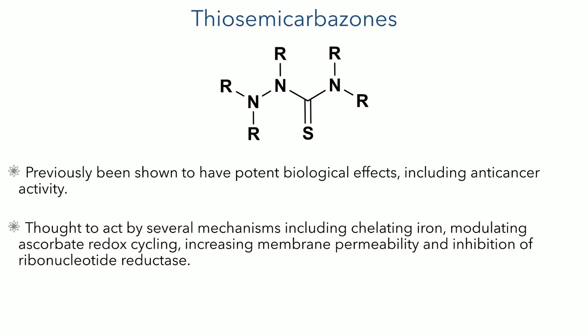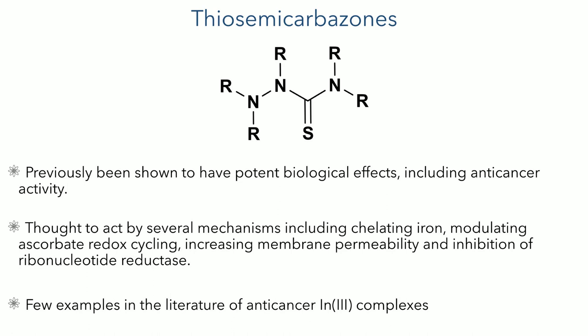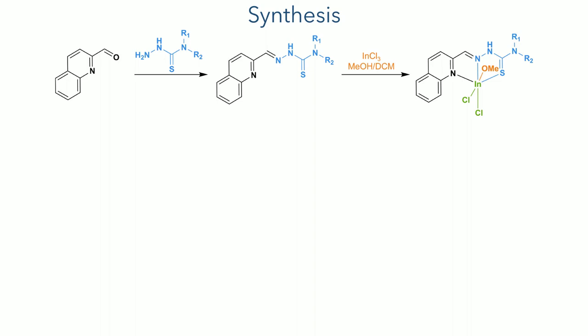There are many examples in the literature of compounds of iron, copper, and zinc showing good biological activity. However, there have been relatively few examples of indium-3 complexes, which this paper explores. The synthesis of these compounds is rather trivial, as the ligands are made by simply refluxing the desired thiosemicarbaside with quinoline-2-formaldehyde, which produces the target thiosemicarbazone ligand. To generate the indium complexes, the ligand was reacted with indium trichloride in a mixture of methanol and DCM at 100 degrees for two days. Upon cooling, this produced crystals of the pure compounds.